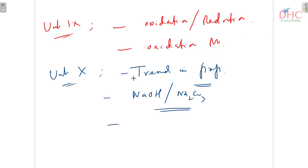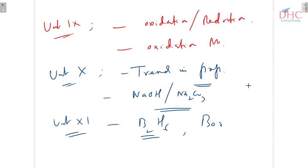In unit 11, in p-block, you have to remember diborane B2H6. Diborane is very important — banana bonding comes in it — and you also have to do borax. In s-block, you have to remember sodium hydroxide and sodium carbonate, their properties and preparation. Trends and properties are also there.